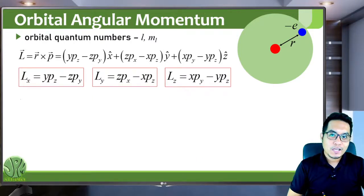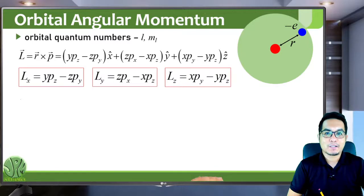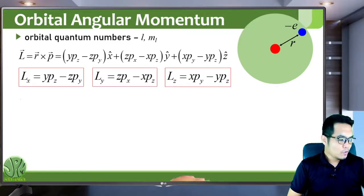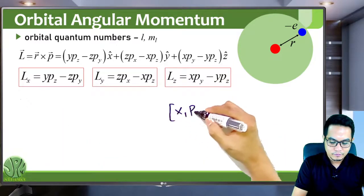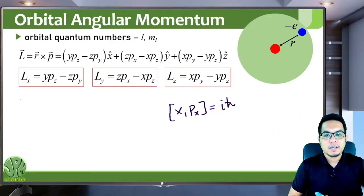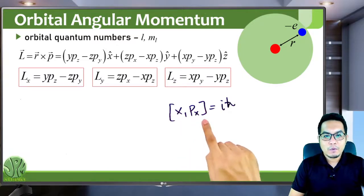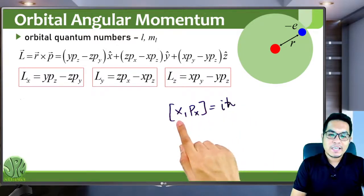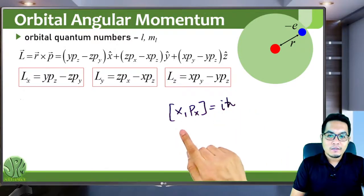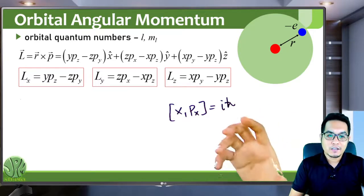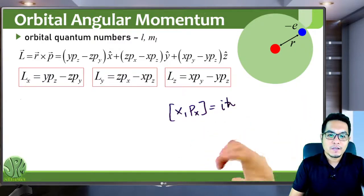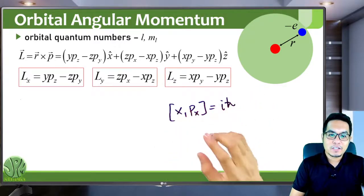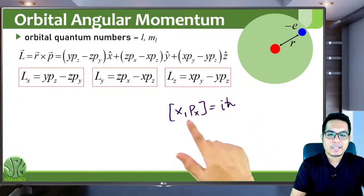We derived the commutation relation of x and px, which is equal to i h-bar. Similarly, the commutation relation for y and py is also i h-bar, and z and pz is also i h-bar. x, y, and z commute with each other, meaning the commutation of x and y is zero, and y and z is also zero. px, py, and pz also commute with each other. The rest of the components commute, except for x and px, y and py, and z and pz.